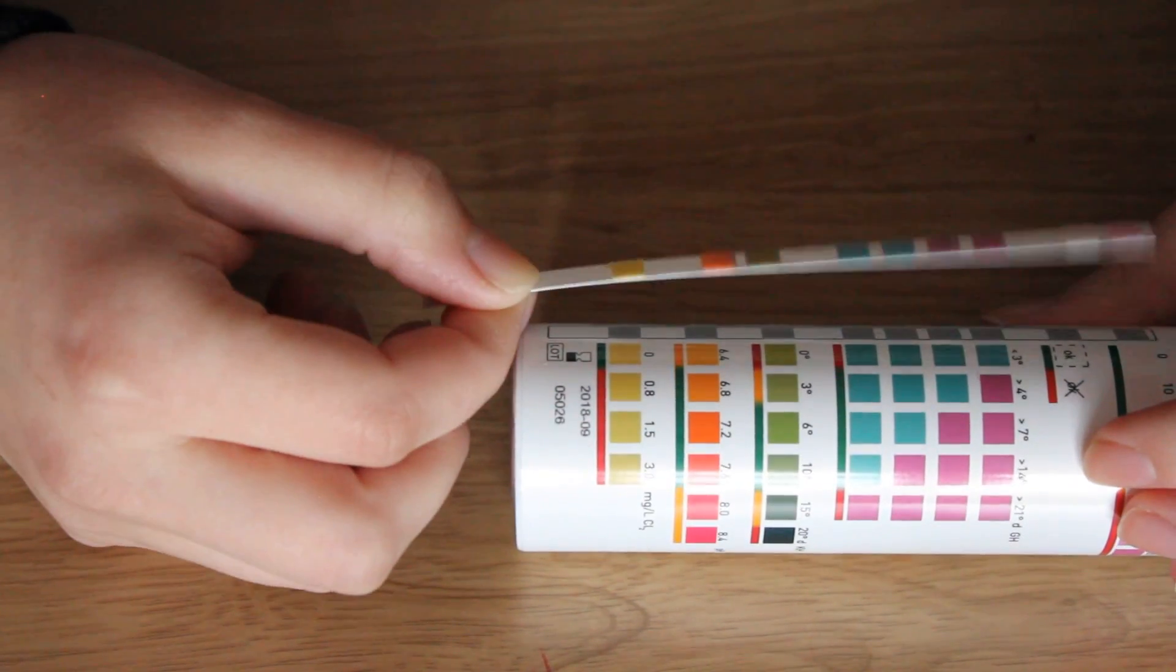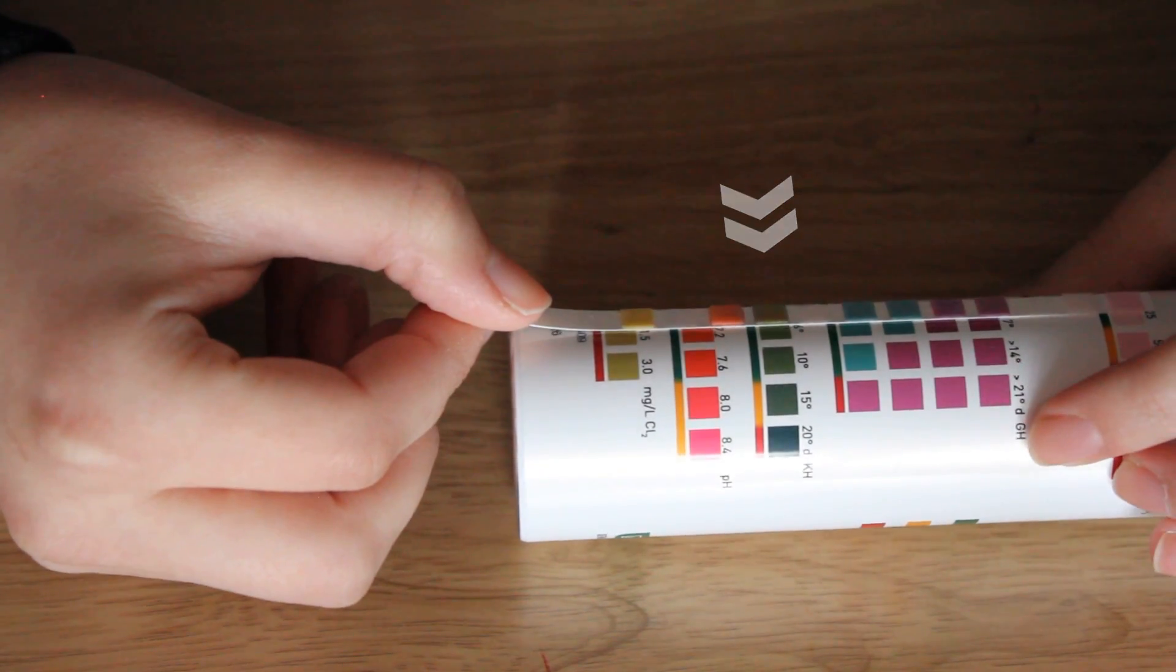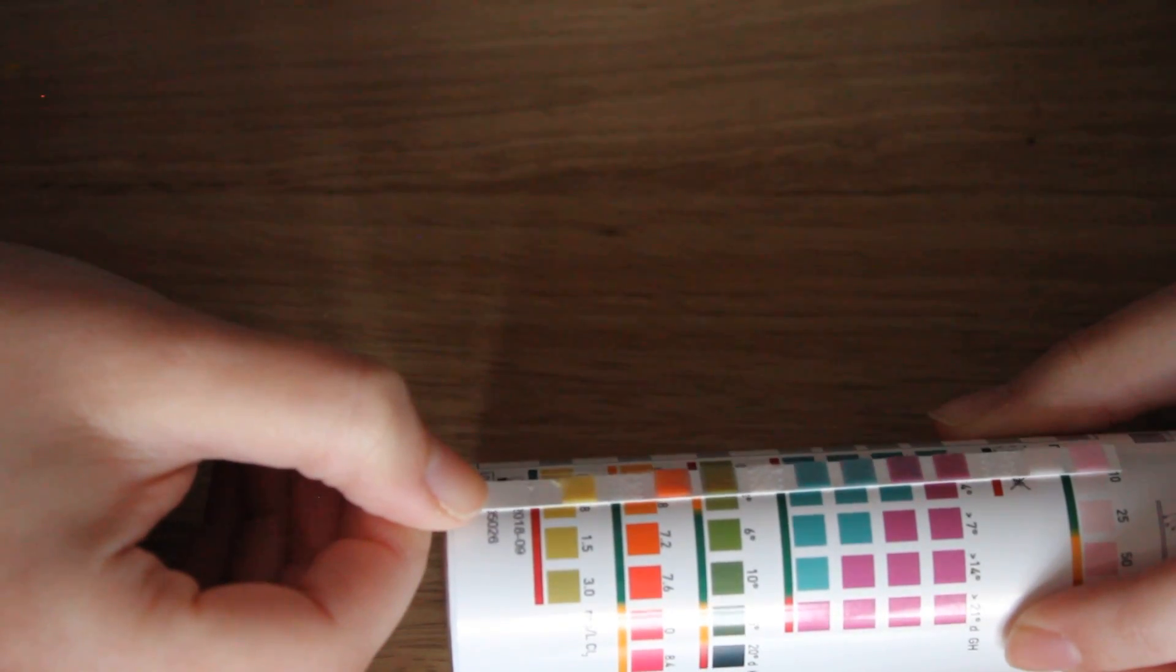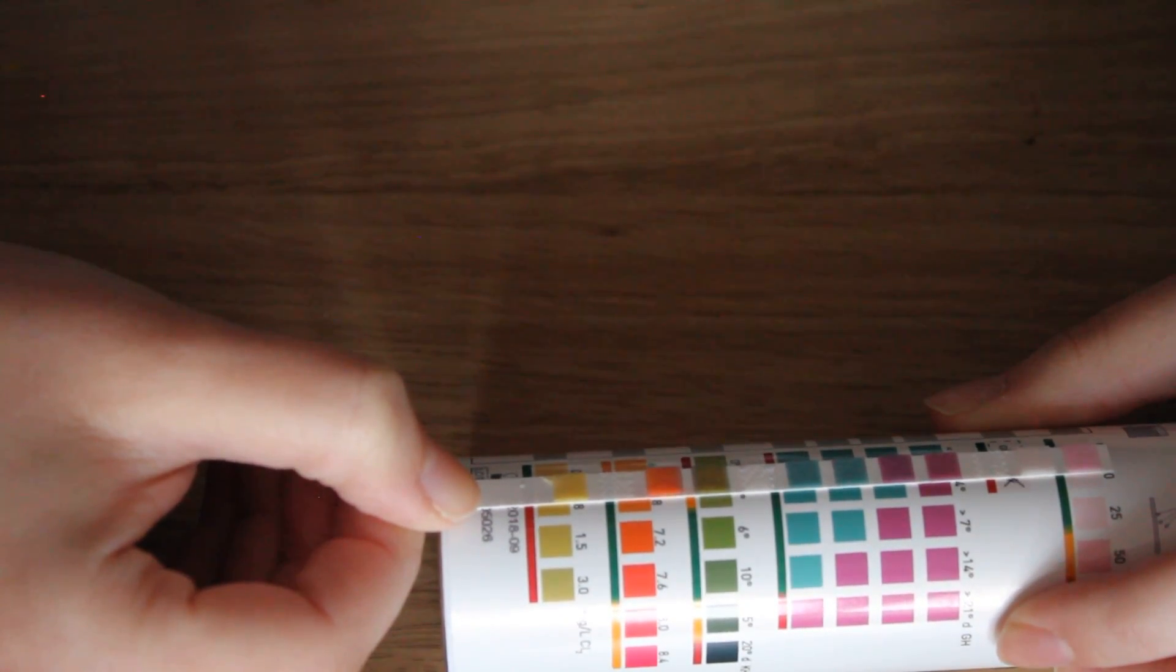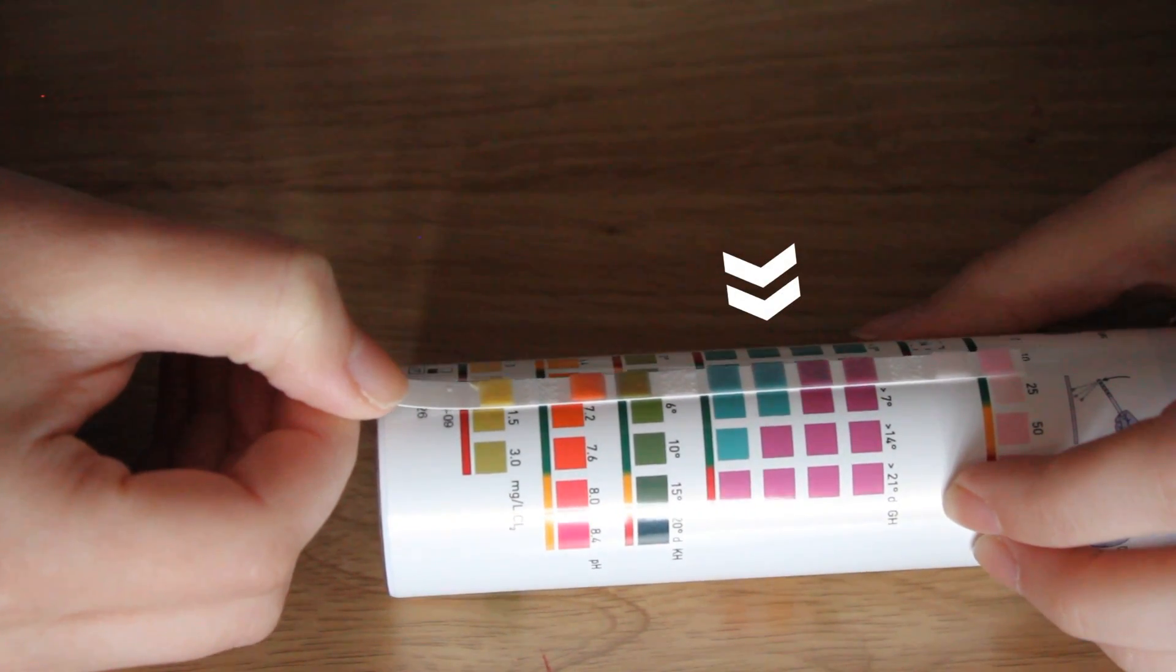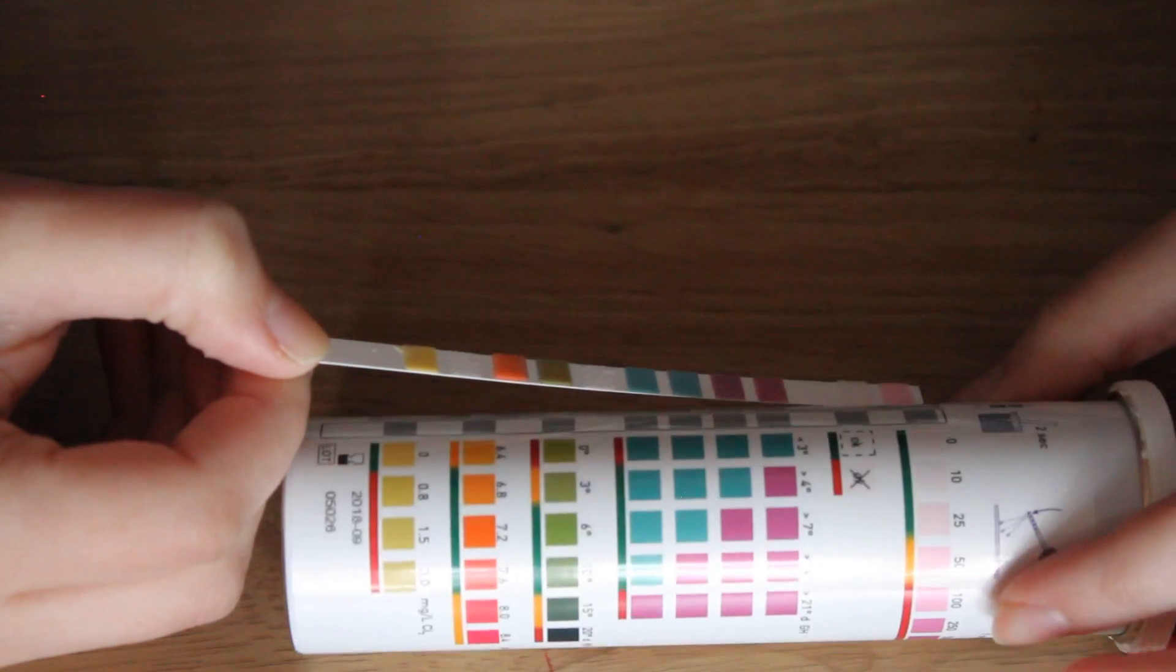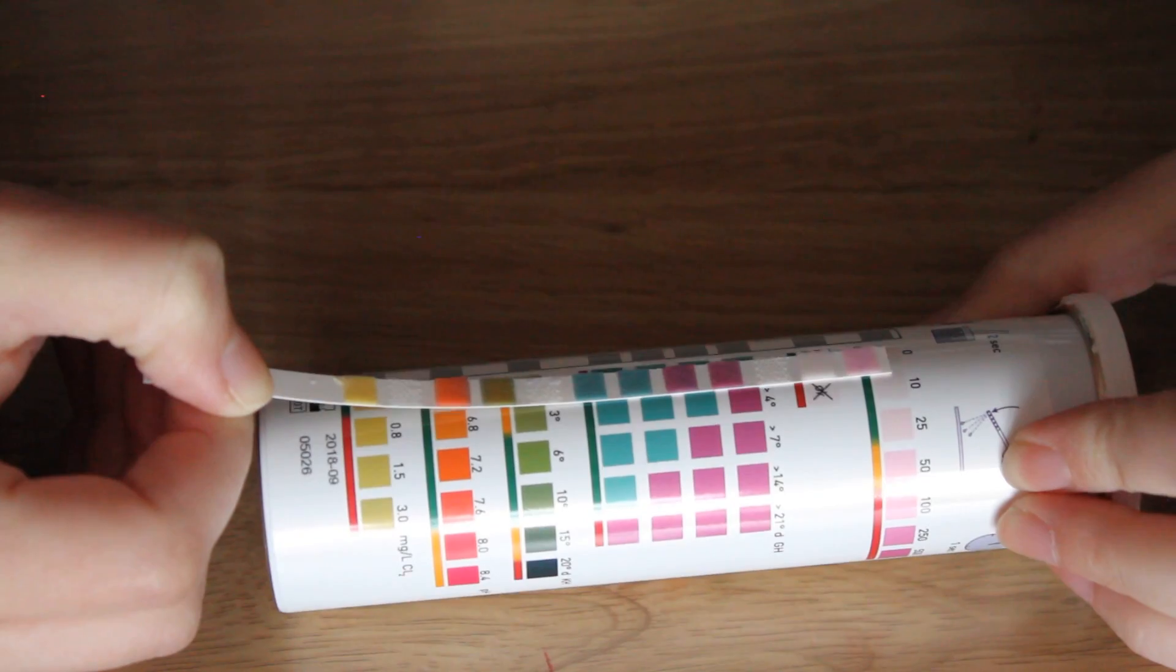Then we have carbonate hardness and we want it to be around here. It looks like it's about three to me, which isn't ideal. Then we have total hardness which looks like it's here, which is less than seven, so that's actually in the green section, so that is good.